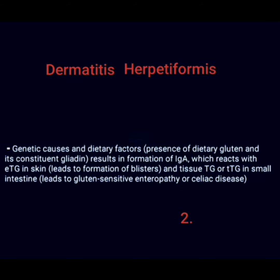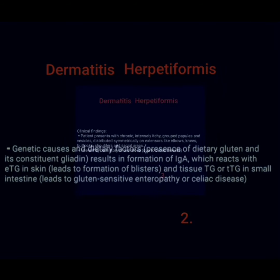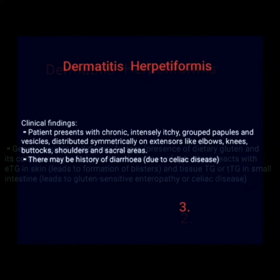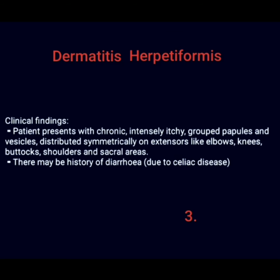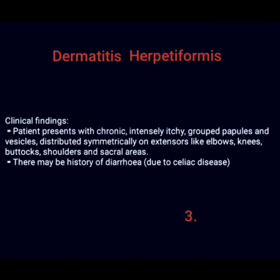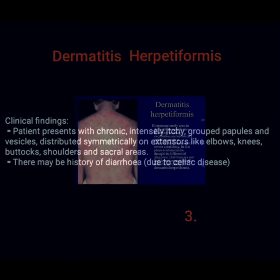Clinical features: patients present with chronic, intensely itchy grouped papules and vesicles distributed symmetrically on extensor surfaces such as the elbow, knee, buttocks, shoulders, and sacral area. There may be a history of diarrhea due to associated celiac disease.